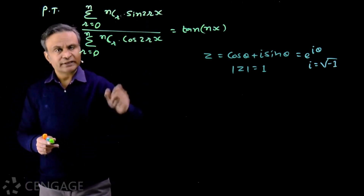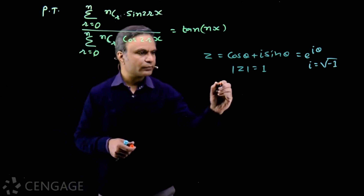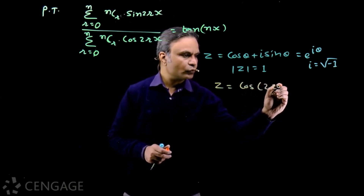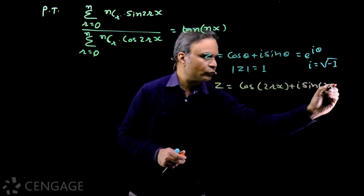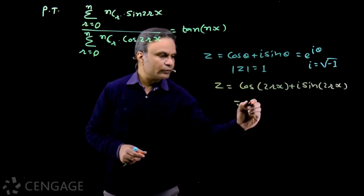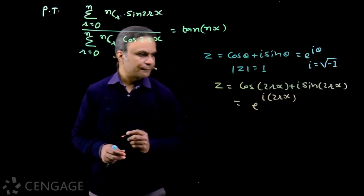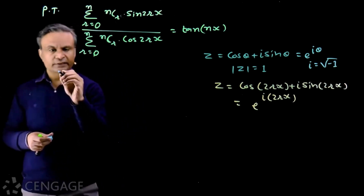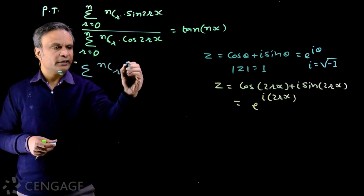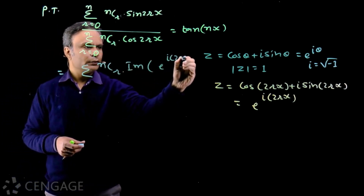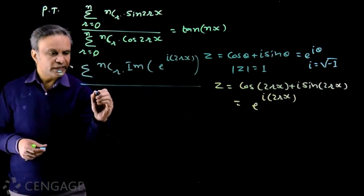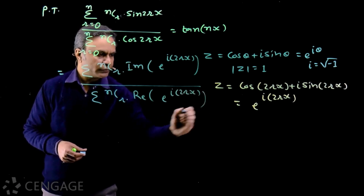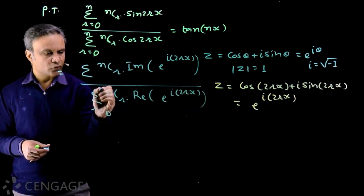Looking at the factors cos(2rx) and sin(2rx), we consider a complex number Z whose argument is 2rx. So we have the complex number cos(2rx) + i sin(2rx), whose Euler form is e^(i·2rx). Now sin(2rx) is the imaginary part and cos(2rx) is the real part of this complex number. So we write this ratio as: sigma of nCr multiplied by the imaginary part of e^(i·2rx), divided by sigma of nCr multiplied by the real part of e^(i·2rx), with r ranging from 0 to n in both sigmas.